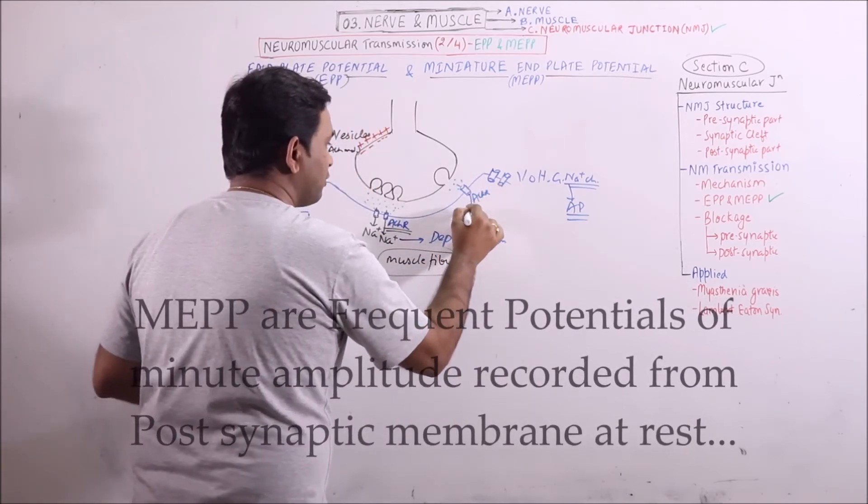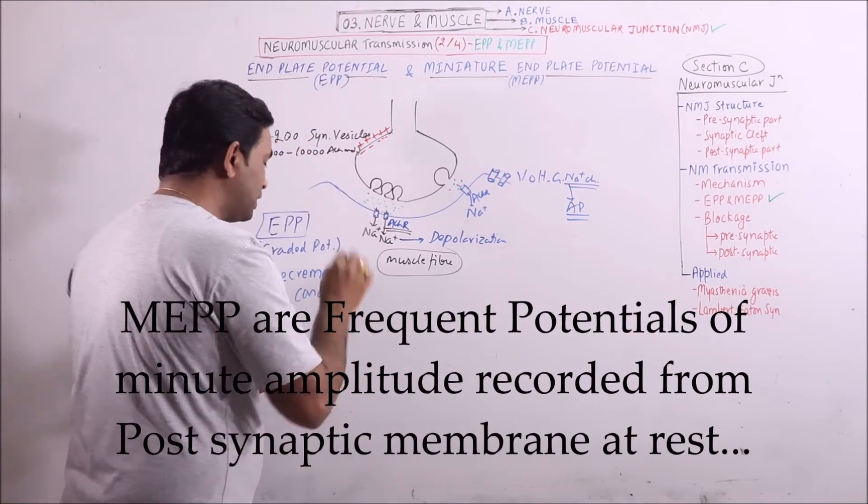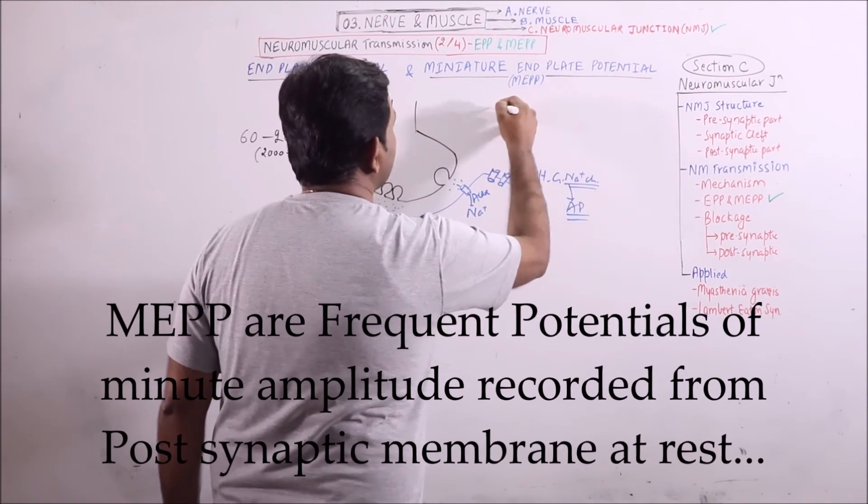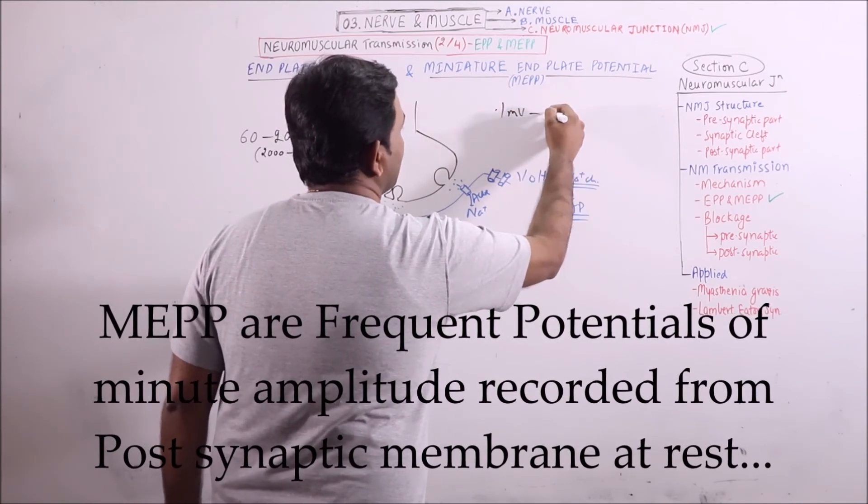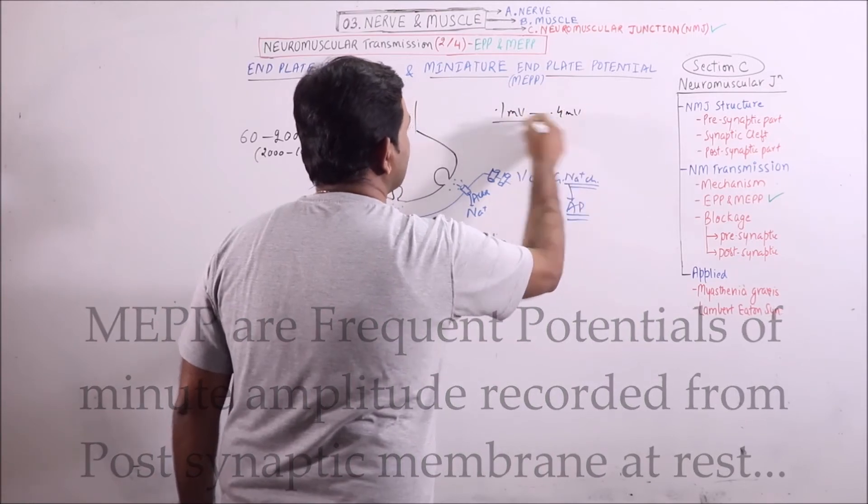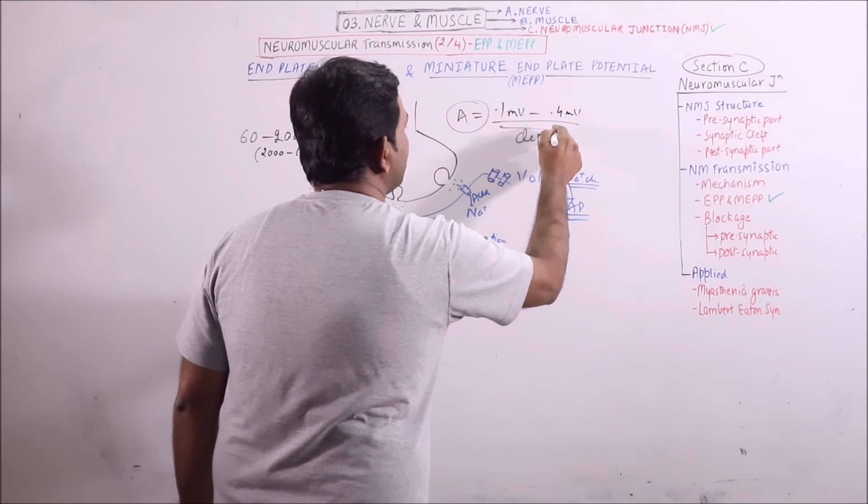Some quantity of sodium will enter and will give rise to small depolarizing values which are known as miniature end plate potential. These are in range of 0.1 millivolt to 0.4 millivolt. Amplitude is in this range and these are also depolarizing.